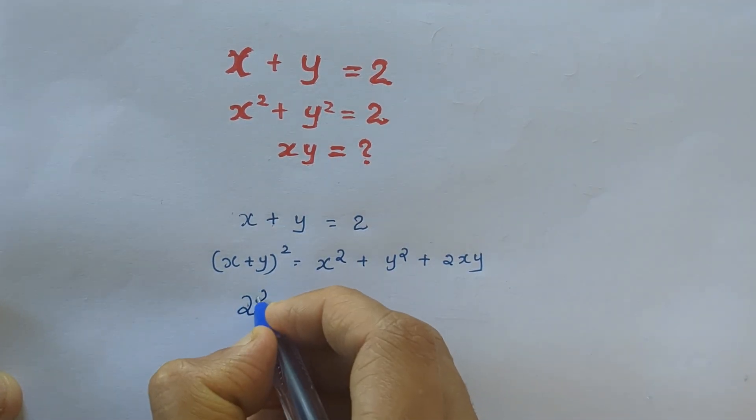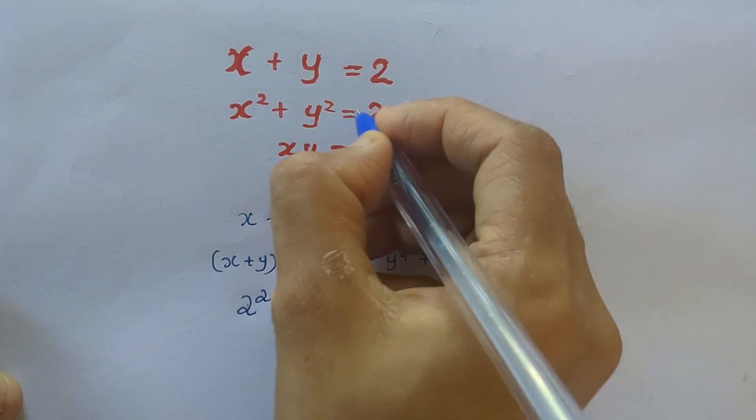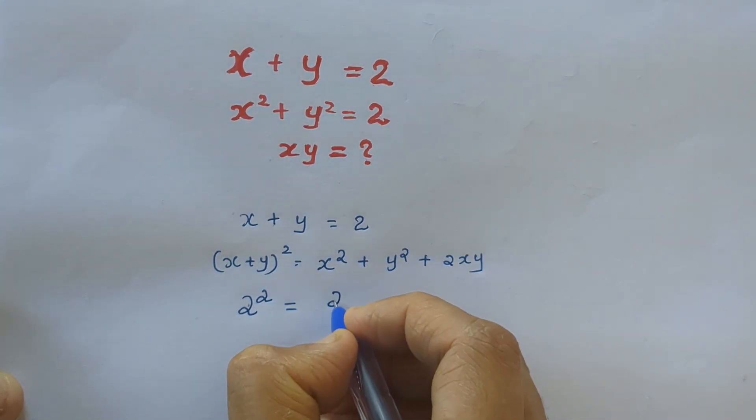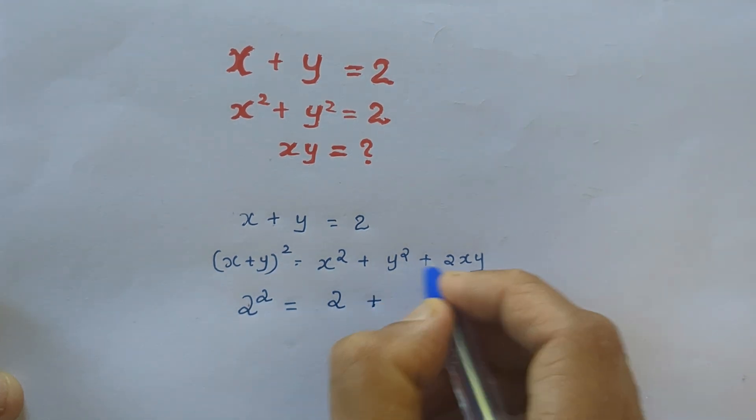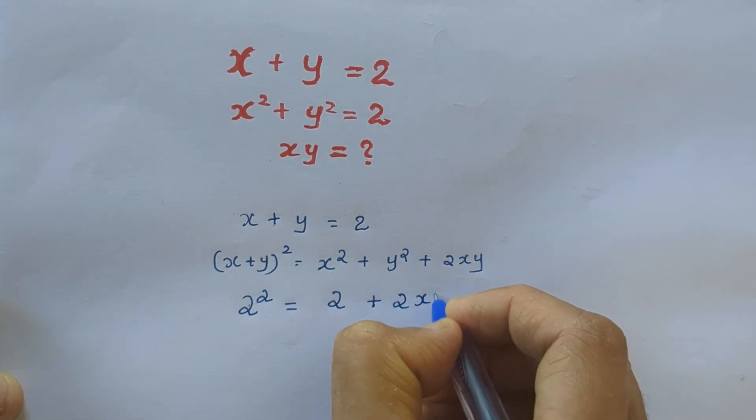So we can substitute it here. So 2 square equal to, what is x square plus y square? It is also 2.